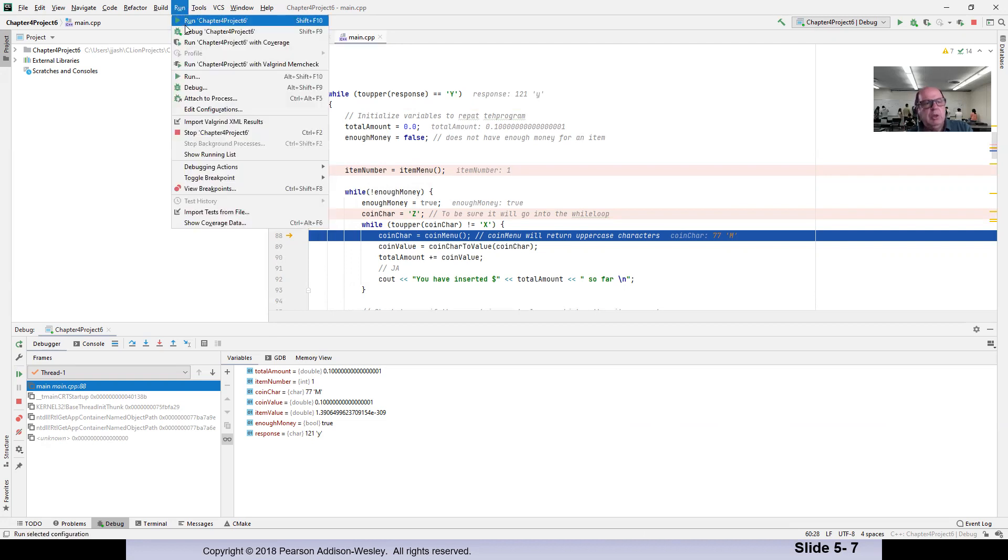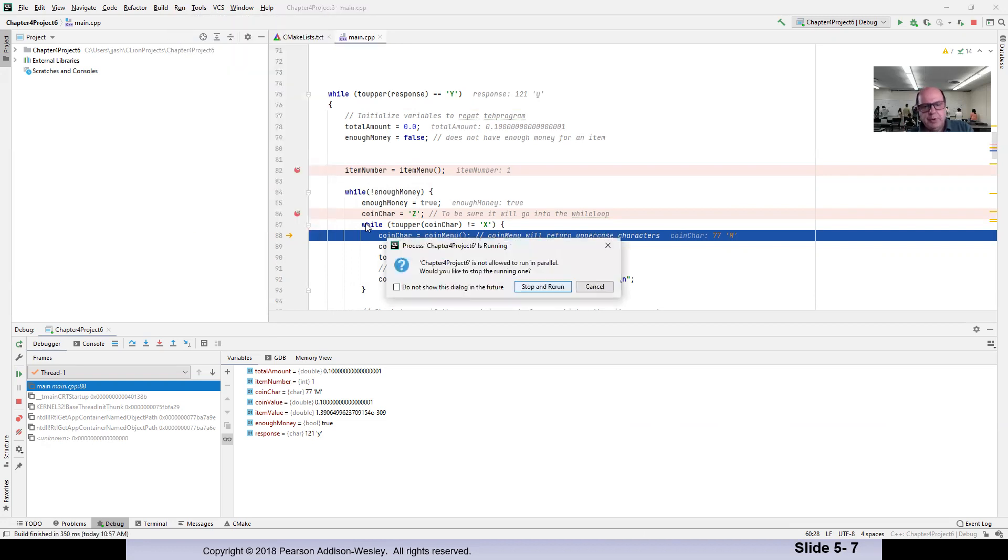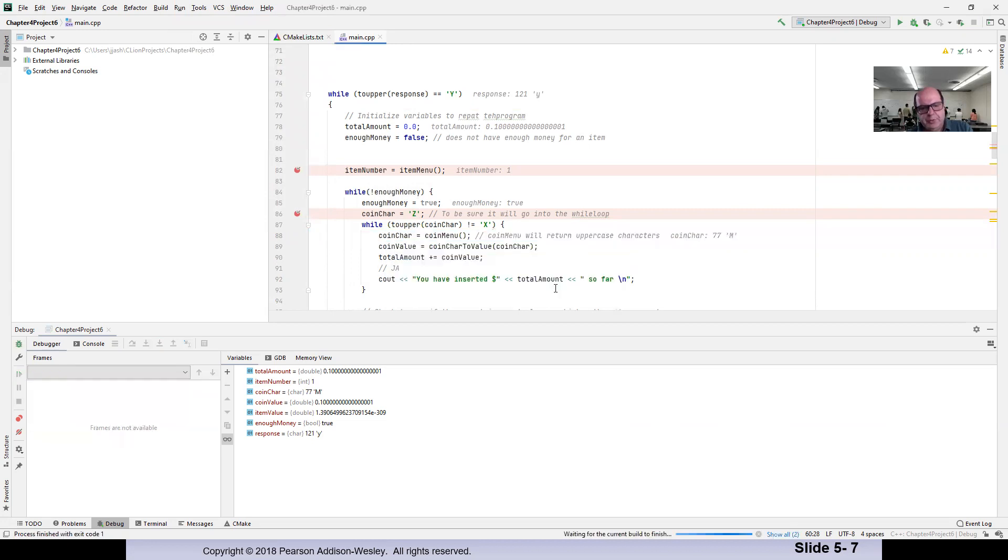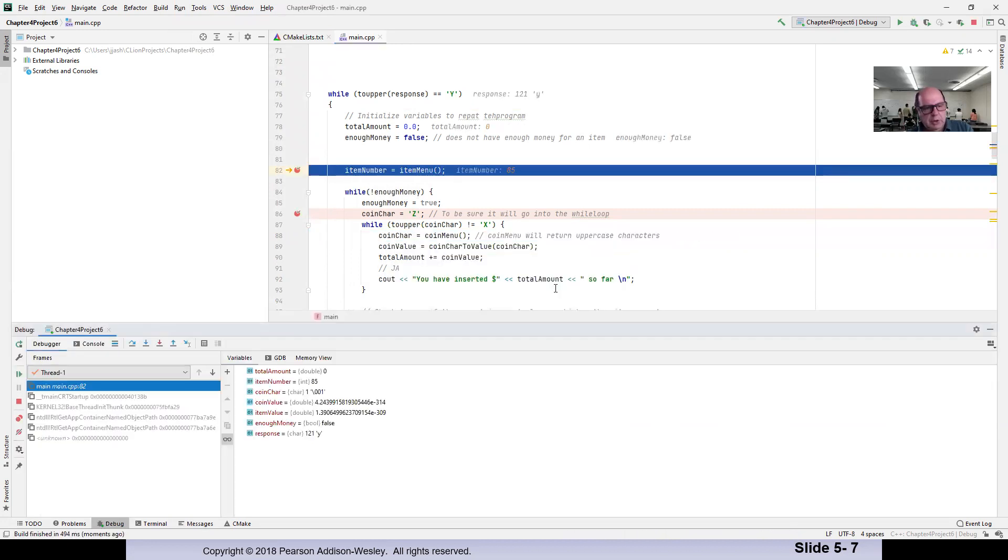So I'm going to do this. I'm going to run with the debug. So it's going to run and it's going to stop at my first flag. It's going to show me all the variables available up to this point.